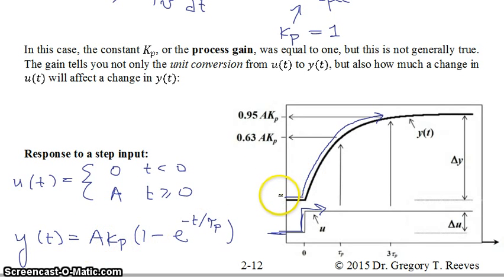The way that this y changes from its initial value to its final value if we call that delta y, and the way this value changes of u from its initial value to your final value if we call that delta u, then kp is going to tell you what that difference in change is going to be. So kp ends up being not only a unit conversion from the units of your input to the units of your output but also how much this delta u will affect your delta y in the end.